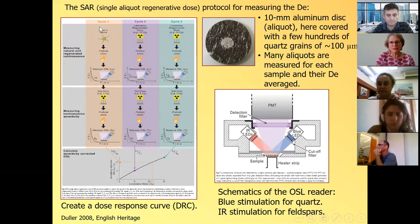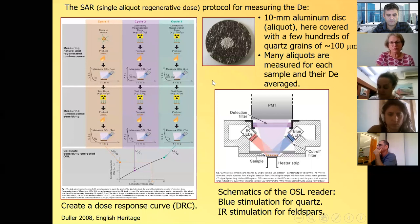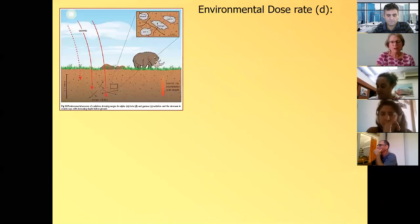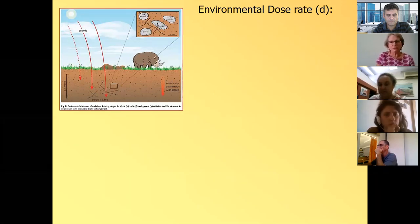And on this dose response curve, we interpolate the natural signal, this orange part of the sequence. It's plotted on this dose response curve, and we go here and get 22 gray. So we can say that this signal that we measured in the lab was formed by 22 gray of natural dose. And we call it the equivalent dose. And this is a SAR protocol. So we have single aliquot regenerative dose. It's called regenerative because we regenerate the signal.